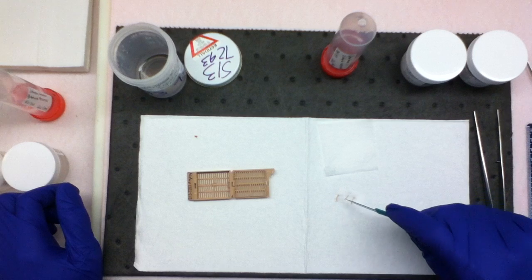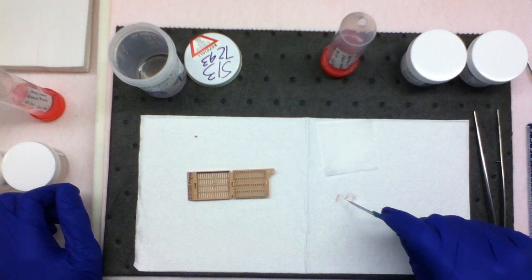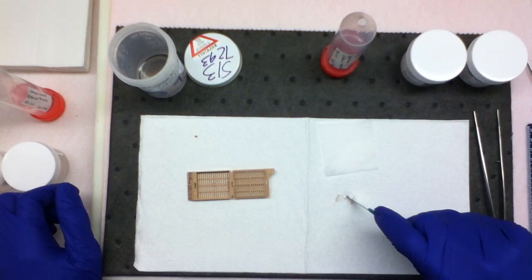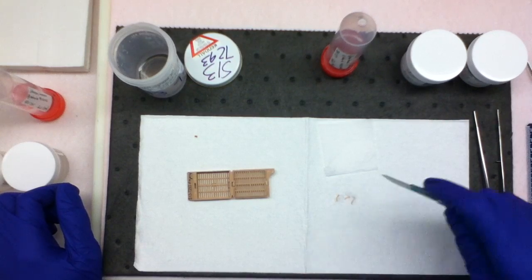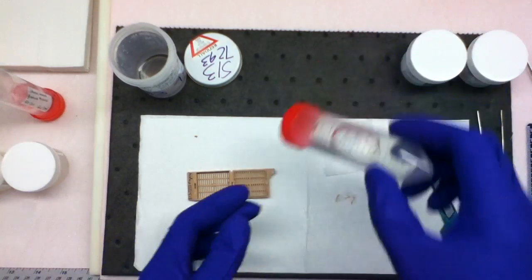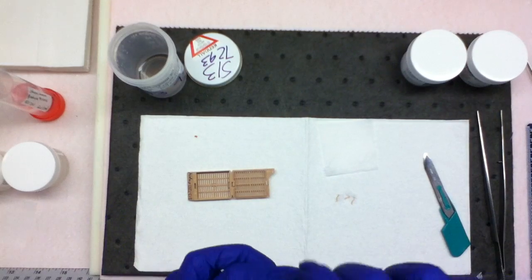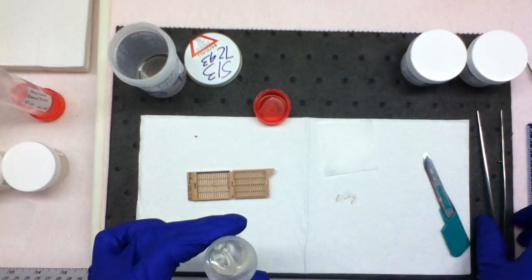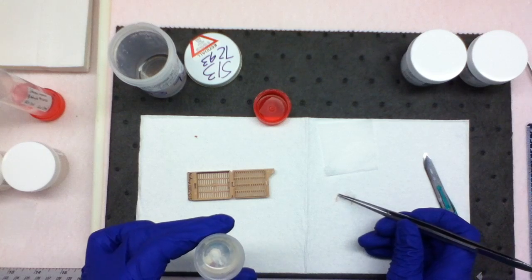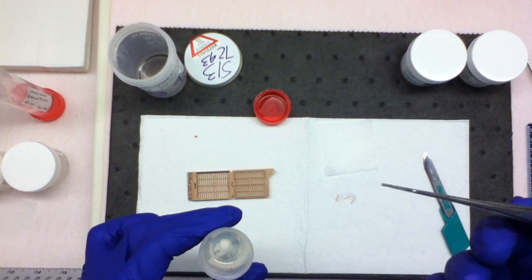The idea here is we're trying to get the part of the core that has glomeruli in it for the EM sample. You put your glutaraldehyde in a tube and you put just the tips, super, super tiny.